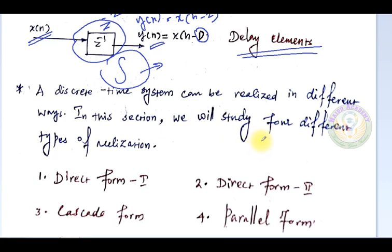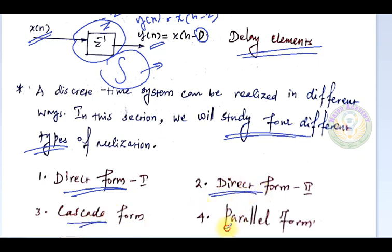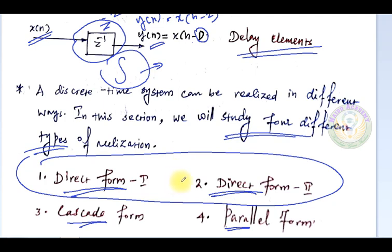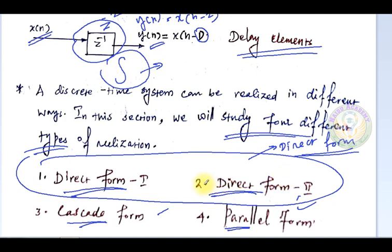Any discrete time system can be realized in four different ways: Direct Form 1, Direct Form 2, Cascade Form, and Parallel Form. Direct Form 1 and Direct Form 2 are sometimes combined and referred to simply as Direct Form. In the direct form there are two types. Generally, Direct Form 2 is the more advanced form and is the one you should mainly consider, which we will see in later videos.